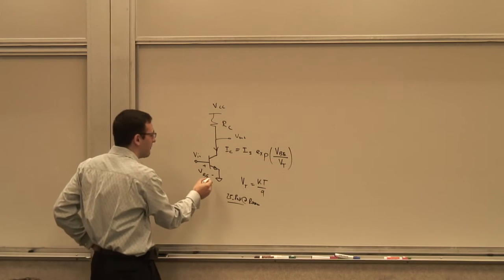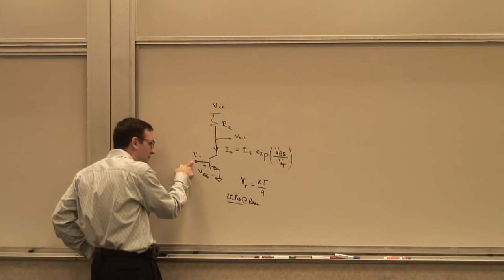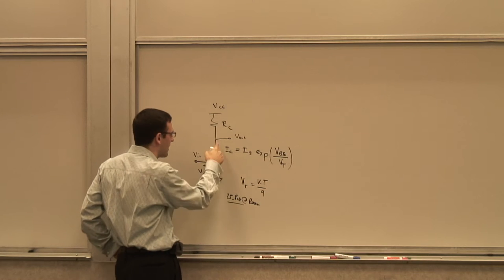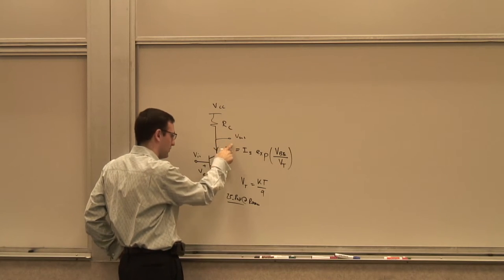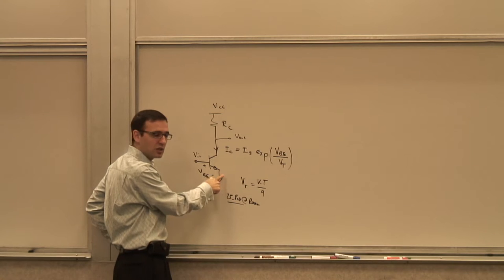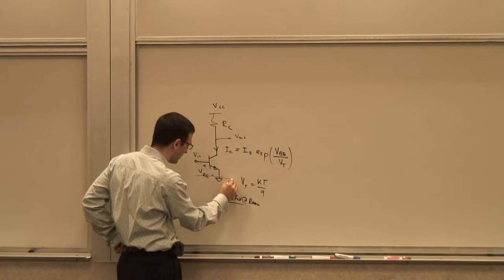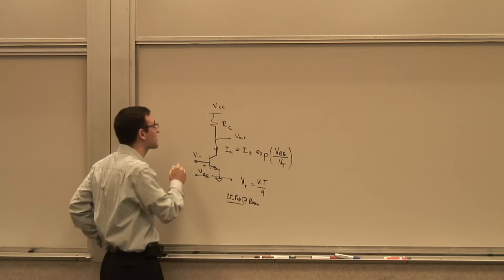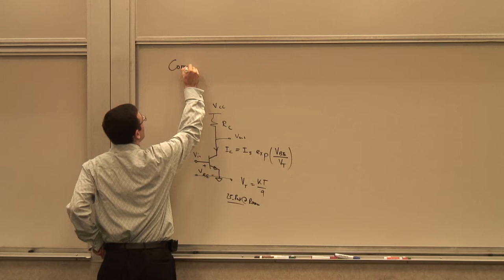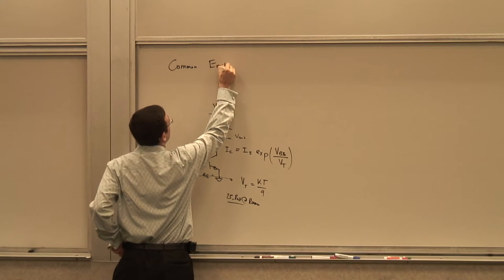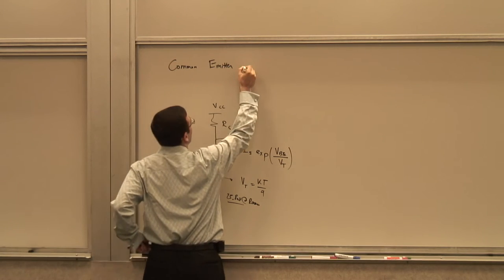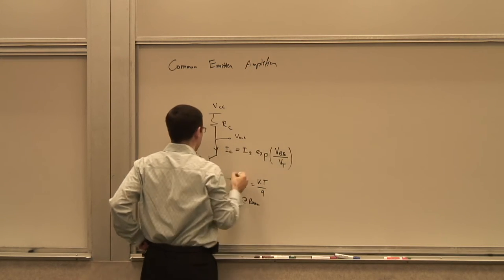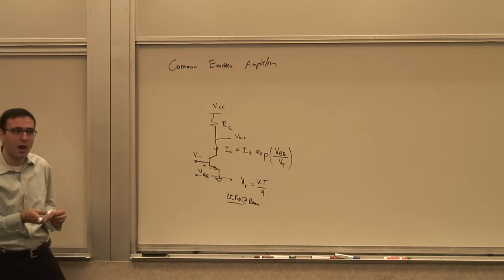In this amplifier, the input is applied between the base and the emitter, and the output is taken between the collector and the emitter. So the common terminal between input and output is the emitter — hence it's called the common-emitter amplifier.